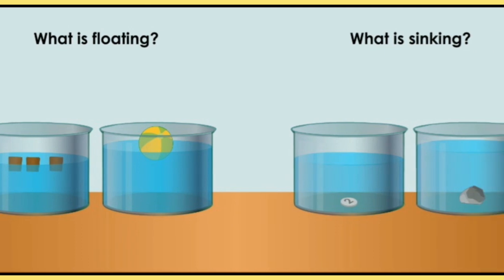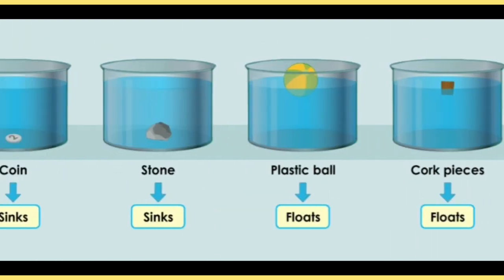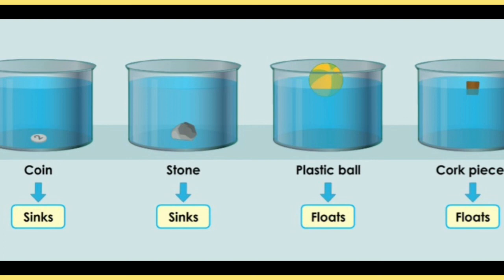This is how we can understand the concept of floating and sinking. Coin, stone, plastic, and cork — some sink and some float. Today we have learned about insoluble substances which are not completely dissolved in water, and about floating and sinking — some objects float in water and some objects sink in water.